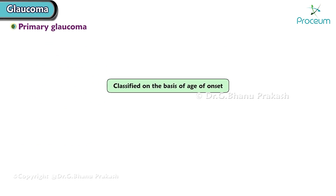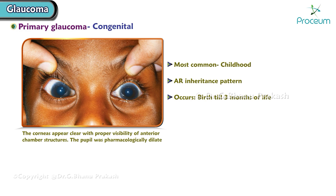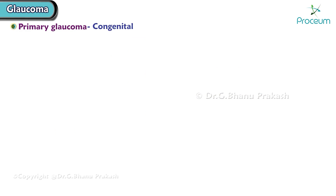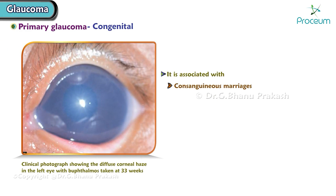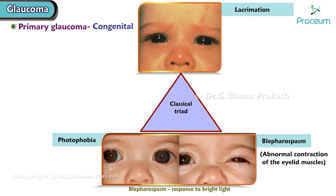Primary glaucoma is classified on the basis of age of onset as primary congenital and primary adult glaucoma. Primary congenital glaucoma is the most common glaucoma of childhood. It has an autosomal recessive inheritance pattern, occurs from birth till three months of life, is associated with consanguineous marriages, and children present with buphthalmus. The classical triad consists of lacrimation, photophobia, and blepharospasm.